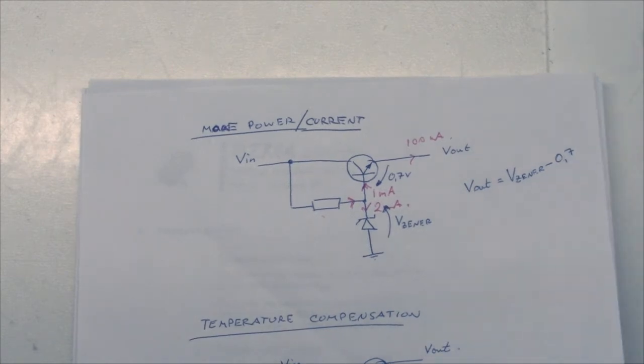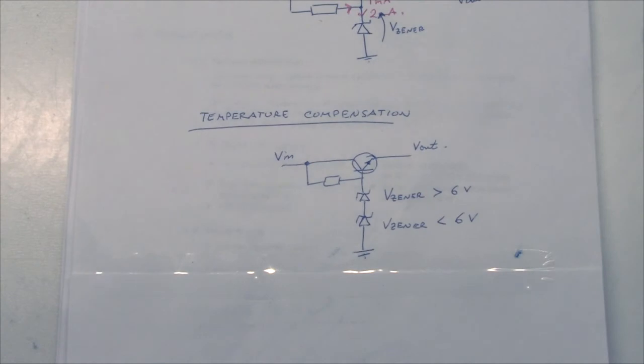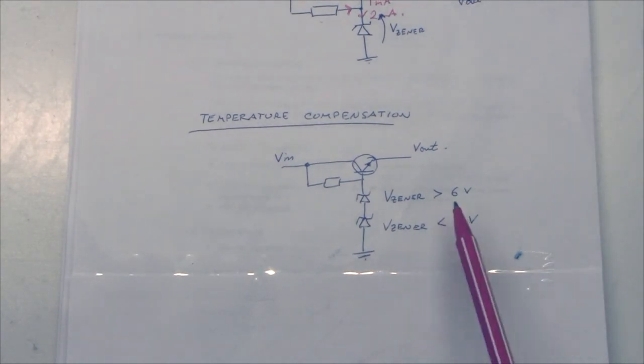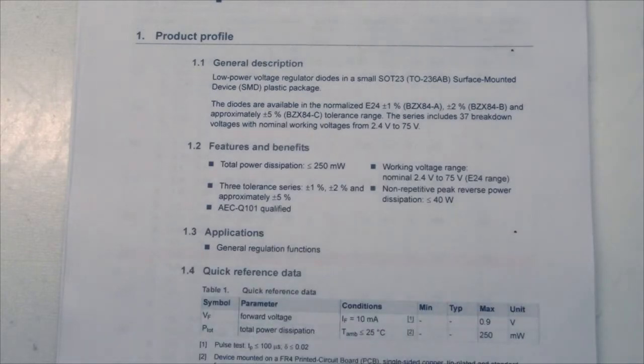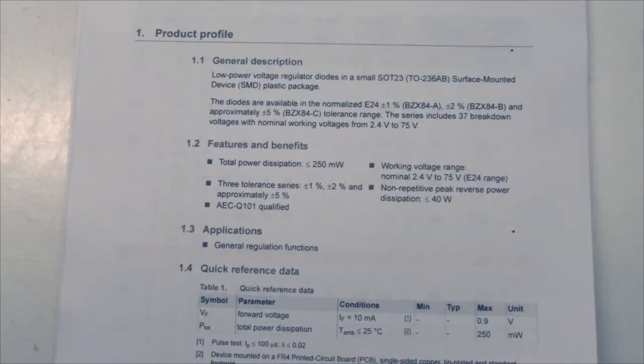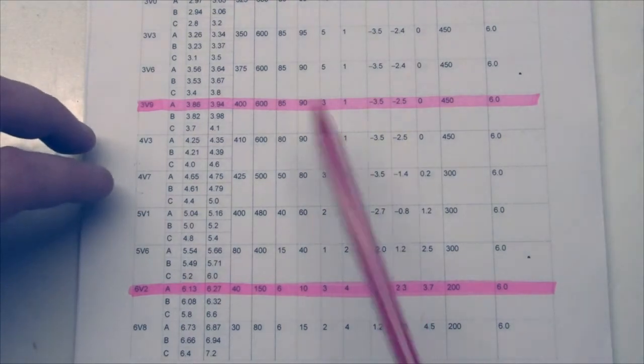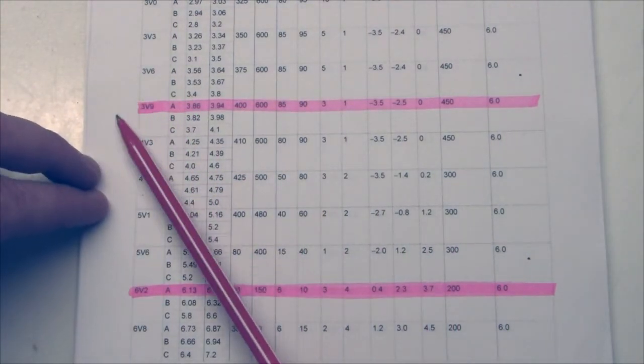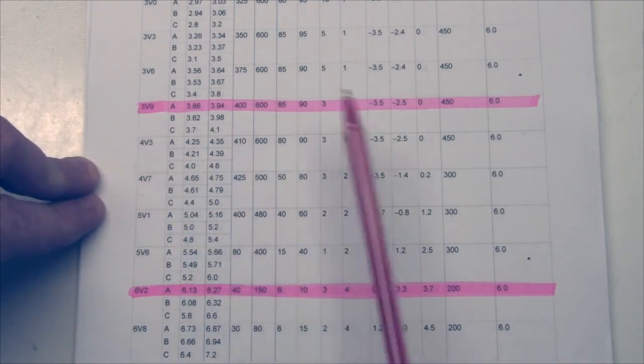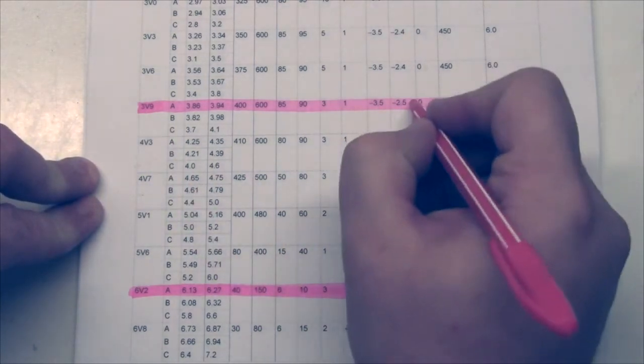Now the next problem is temperature stability. You can put two Zeners in series. If one has a voltage of bigger than 6 volts and the other voltage smaller than 6 volts, they will have different temperature coefficients and so they will cancel out more or less. I have a datasheet here for a typical Zener diode, the BZX84. If we look at the spec, I have highlighted a diode with a 3.9 volt Zener voltage, and it has a temperature coefficient of typically minus 2.5.